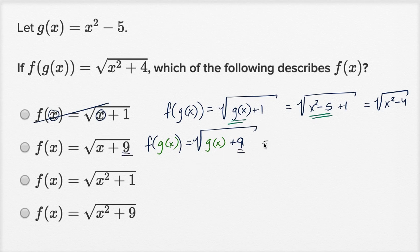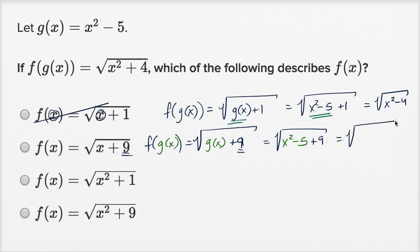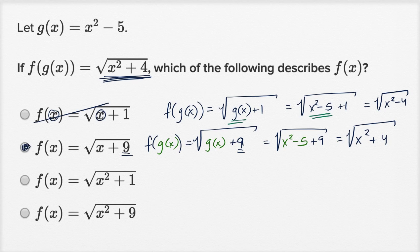We have a nine here, so this is going to be the square root of g of x plus nine. G of x is x squared minus five, and then you add nine. This gives us the square root of x squared minus five plus nine, that's going to be plus four — which is exactly what they have. So if f of x is equal to the square root of x plus nine, then f of g of x gives us this result. That's our choice.